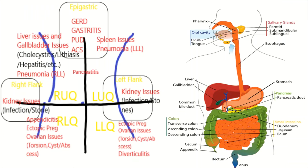The location of pain in the abdomen can signal its cause. The abdomen is divided into quadrants: right upper, left upper, right lower, left lower, along with the epigastric region, right and left flanks, and the suprapubic region. Pain in the right upper quadrant can signal liver and gallbladder issues, or even right lower lobe pneumonia as pain can radiate down. Pain in the epigastric region can result from GERD, gastritis, peptic ulcer disease, pancreatitis, or even acute coronary syndrome.